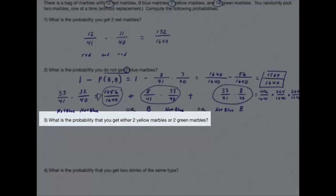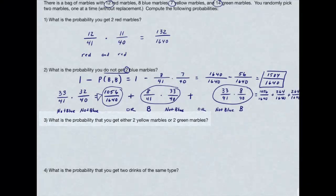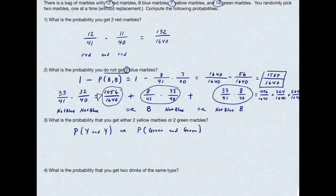Question number 3. What's the probability I get either 2 yellow marbles, or 2 green marbles? That's the probability I get yellow and yellow, or the probability I get green and green. The probability my first marble is yellow is 7 divided by 41, times 6 divided by 40. Again, 'and' translates to multiplication. The 'or' translates to addition, because these are mutually exclusive, or disjoint events.